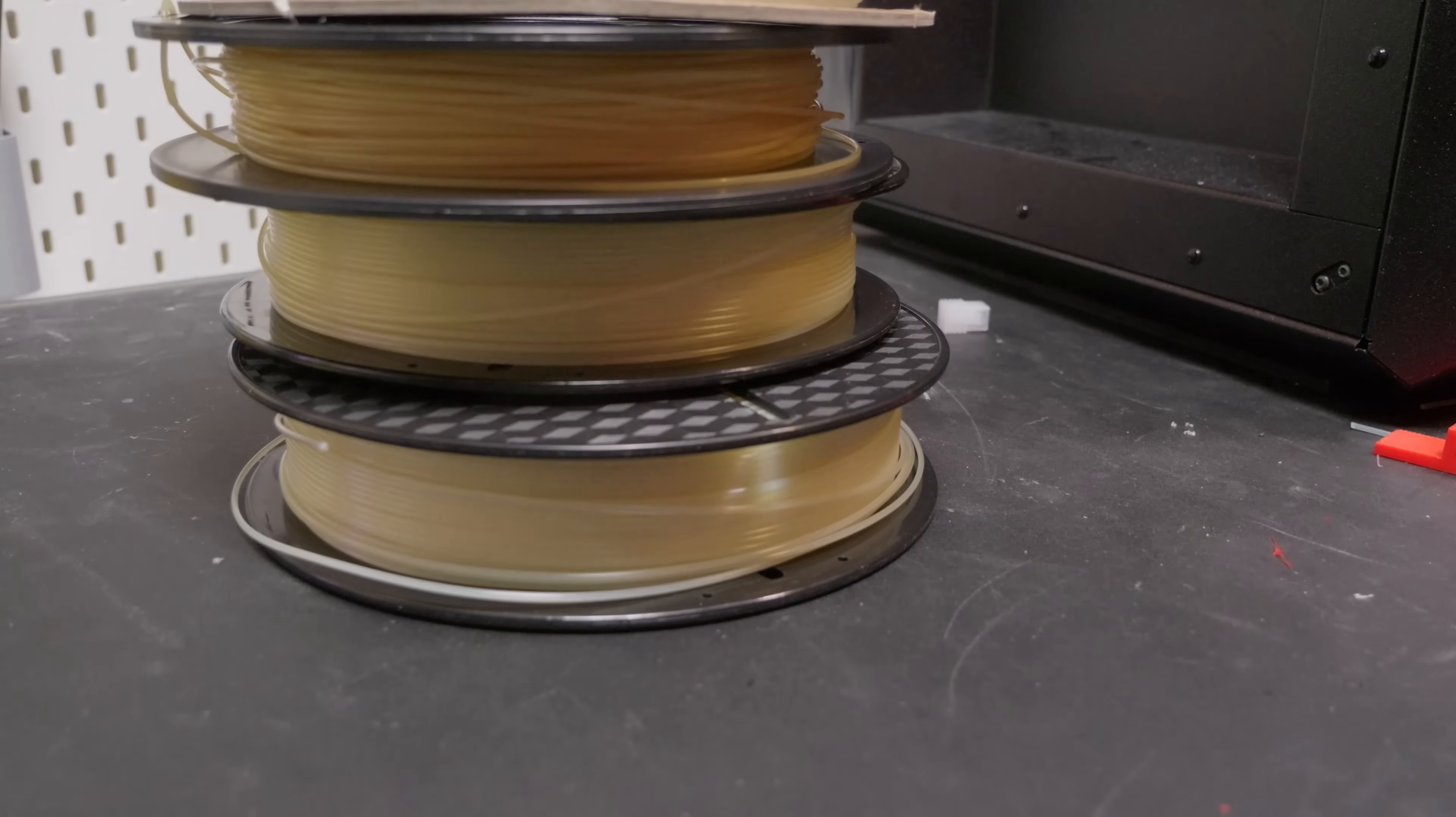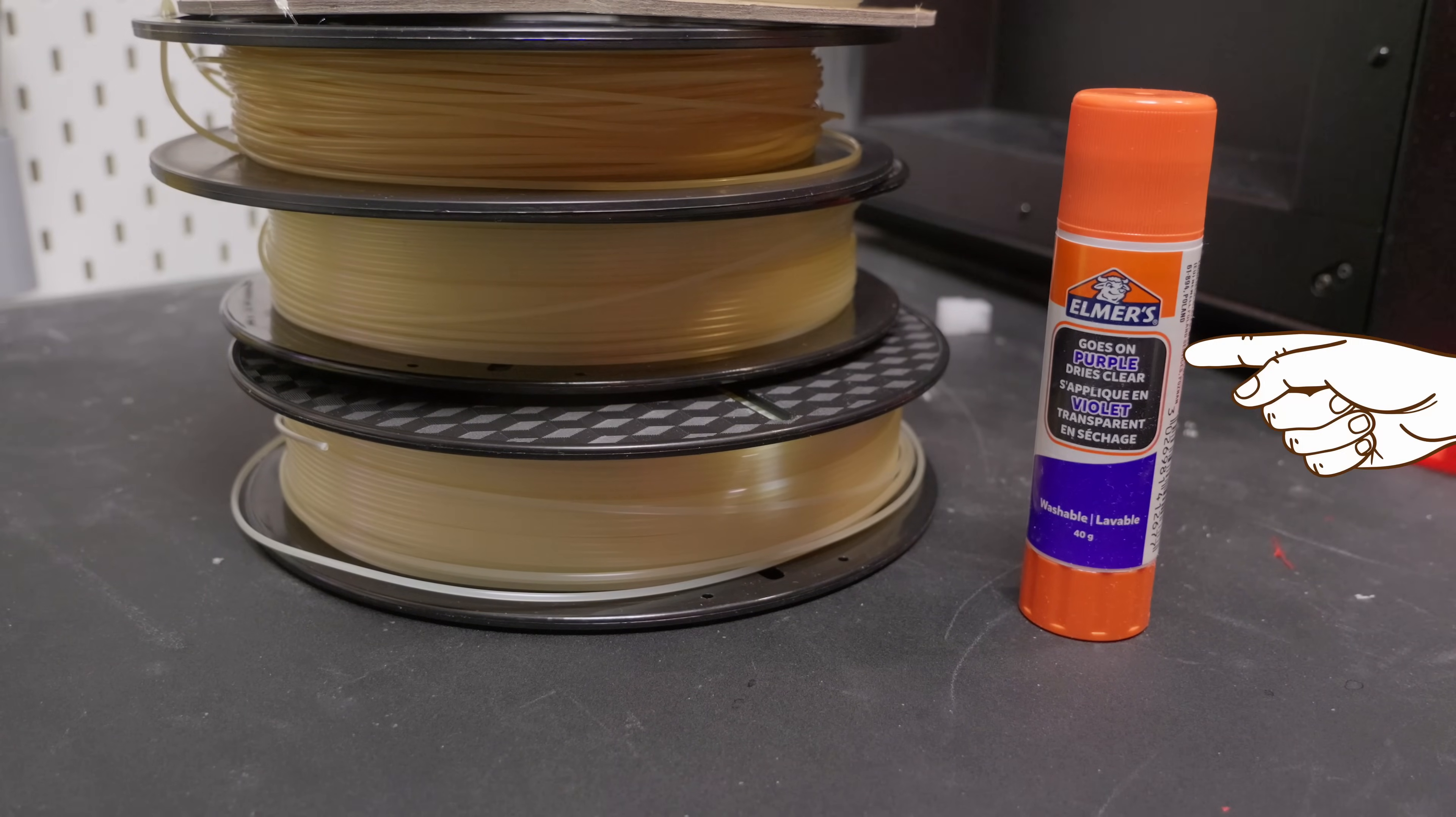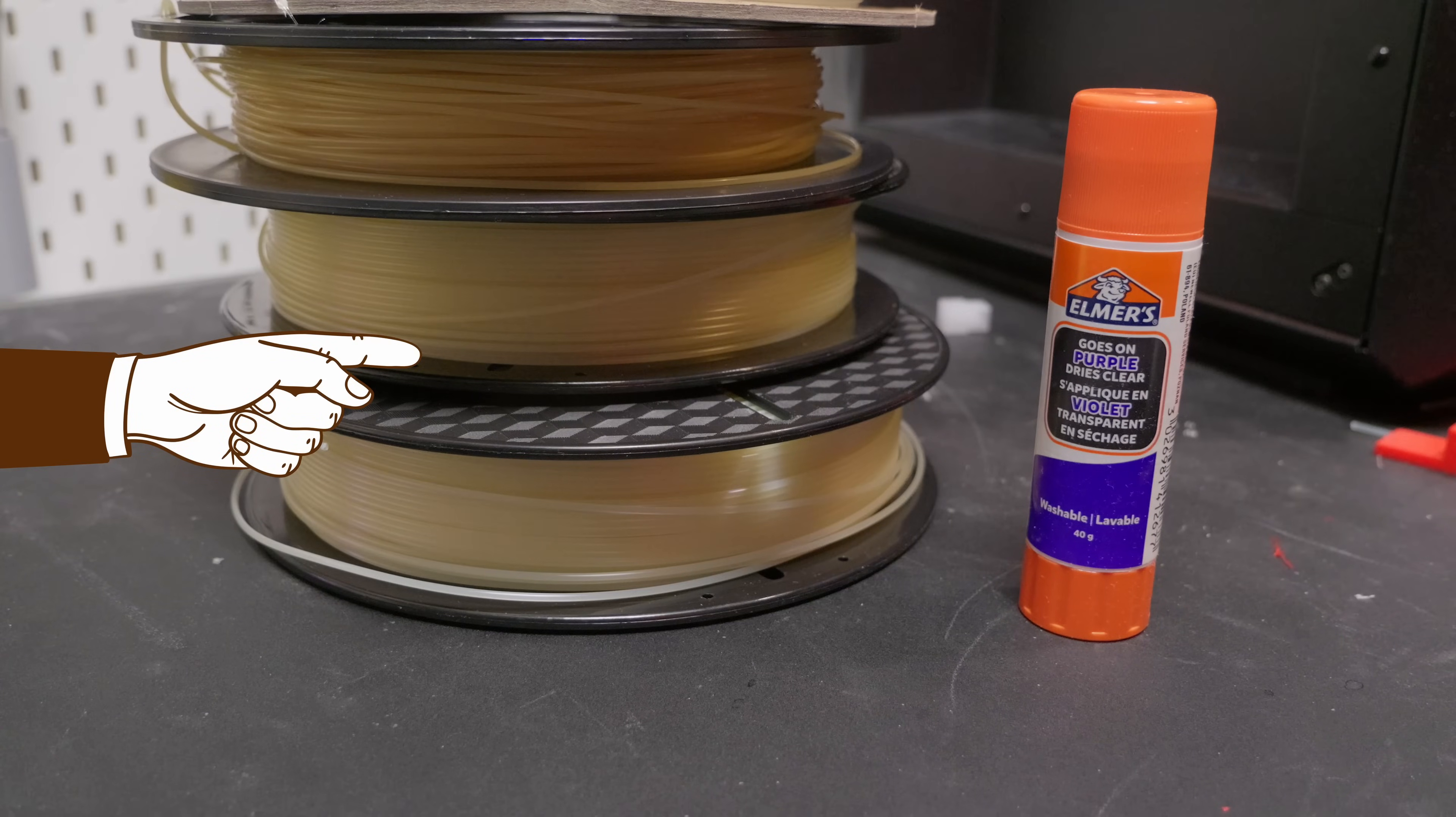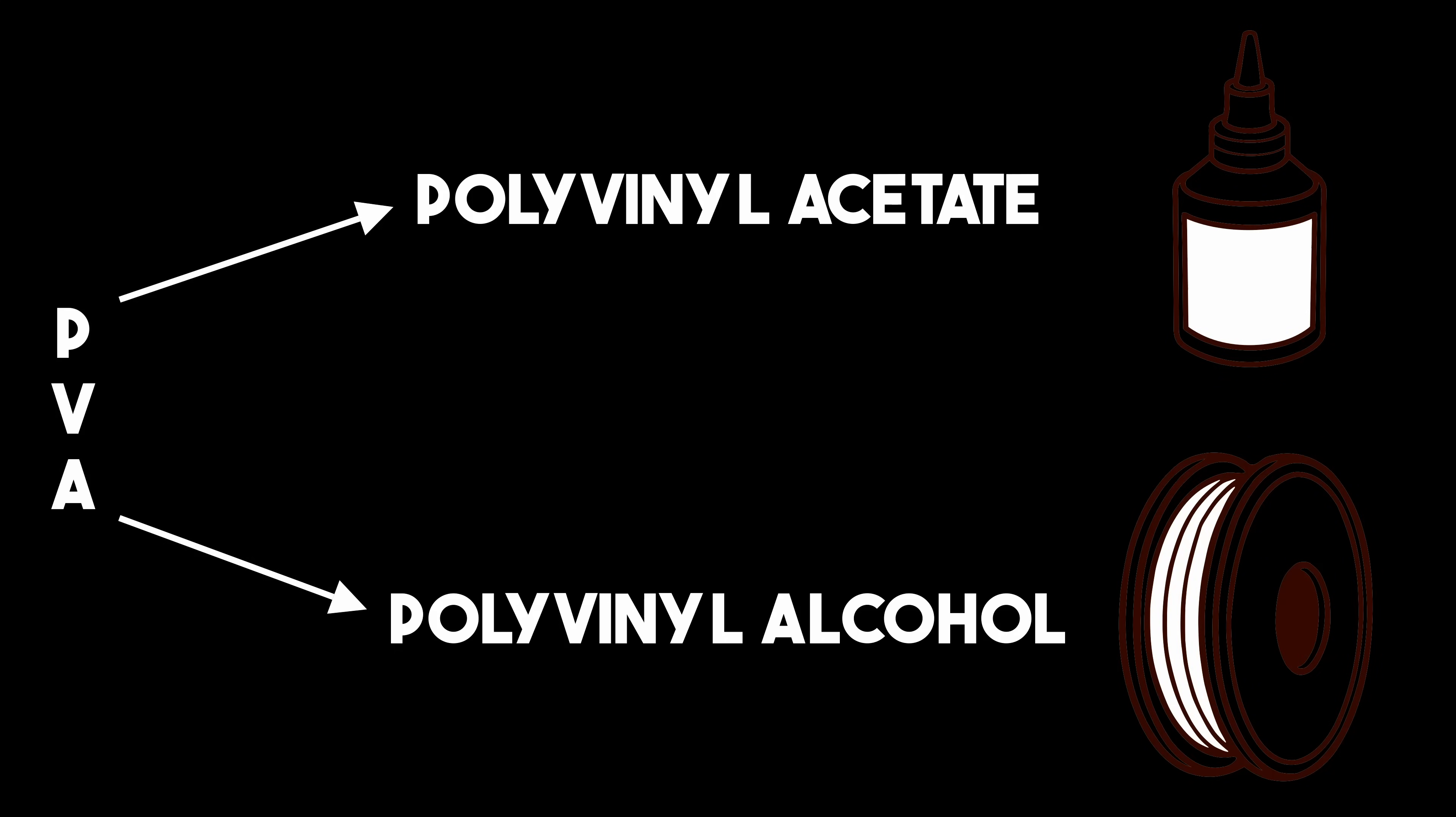Okay, chemistry time. PVA stands for, well this bit might actually surprise you. This is PVA glue, just normal glue stick. This is PVA filament. Conveniently, the Institute for Three Letter Acronyms decided to use PVA for both of these things that kind of seemed the same. And I think on the face of it you might just assume that they're the same thing, but they're actually not the same thing. The glue is polyvinyl acetate. The filament is polyvinyl alcohol.